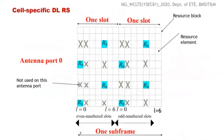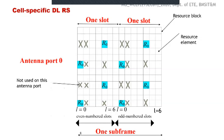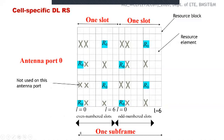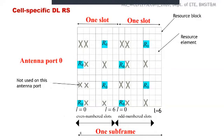For antenna port 0, the cell-specific reference signal is transmitted in the first OFDM symbol (L=0) and the fifth OFDM symbol of one slot. This R0 pattern repeats in both slot 0 and slot 1 of a subframe. In the frequency domain, for the first OFDM symbol, the reference signal repeats every six subcarrier frequencies. For the fifth OFDM symbol, it starts from the third subcarrier frequency, also with a gap of six subcarriers.